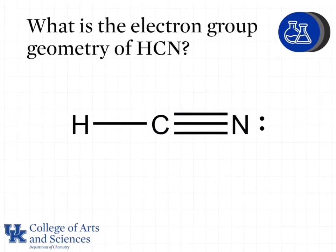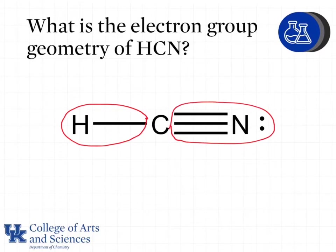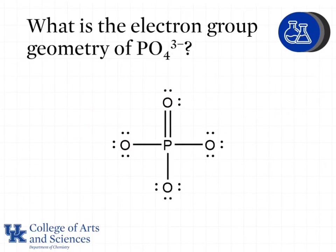What is the electron group geometry of HCN? When we look at carbon, which is our central atom, we see that it has two groups, so we will have linear geometry. What is the electron group geometry of PO4³⁻?